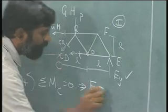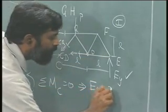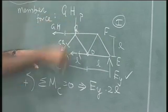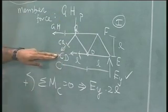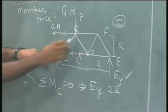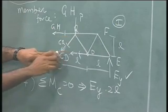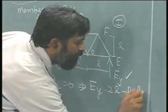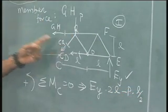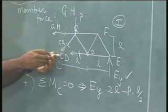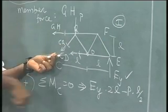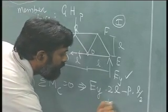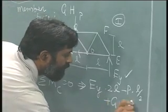It is EY times the length which is 2L. The other force that is existing is P and that is in the clockwise sense about C which is about L by 2 from C and therefore, it is minus P times L by 2. Is there any other force? GH is acting. GH is in the anticlockwise sense and the height is equal to L which means it is plus GH times L equals 0.